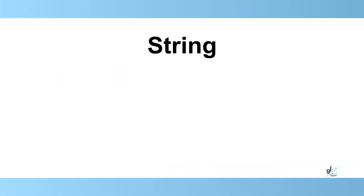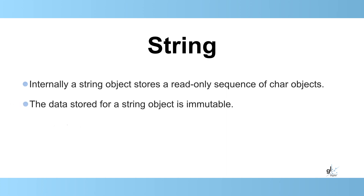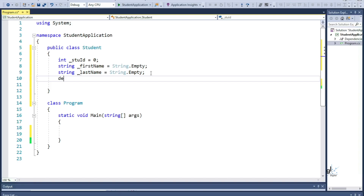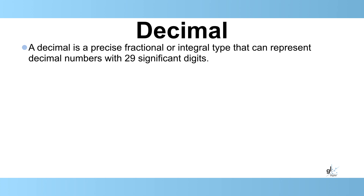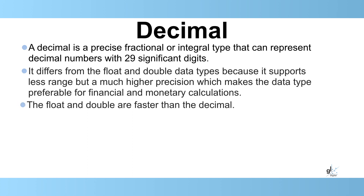String: internally, a string is stored as a read-only sequence of char objects. A string is immutable. A string is a reference type. Decimal: a decimal is a precise fractional or integral type that can represent decimal numbers or numbers with 29 significant digits. It differs from the float and the double data types because it supports less range, but a much higher precision, which makes the data type preferable for financial and monetary calculations.